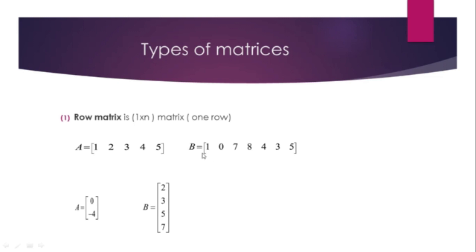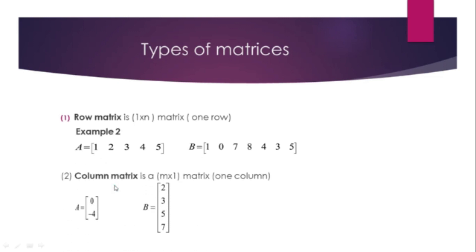Second: Column matrix — an m by 1 matrix, meaning it has only 1 column. For example, A equals [0, -4] and B equals [2, 3, 5, 7] are column matrices.